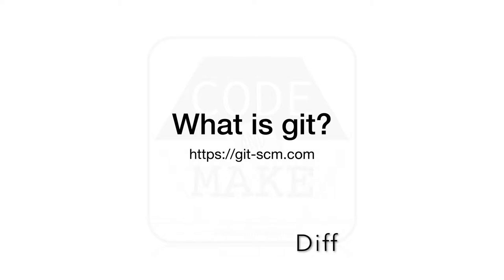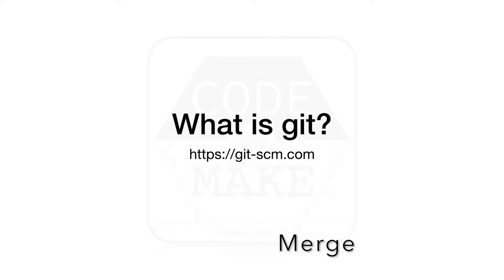Git is not limited to text files, however. All of the assets that make up a software project can be managed with Git. Git allows you to revert the state of a project to an earlier commit. The history of your project does not have to be linear, however. Git allows you to branch from any commit and merge commits from other branches. In Git terminology, switching to a commit or branch is known as a checkout.